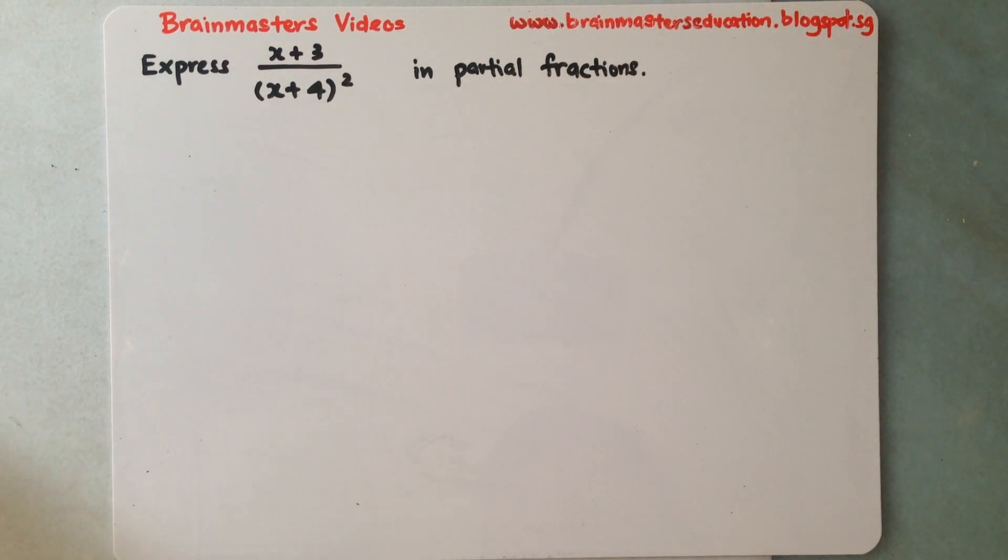Welcome back to Brainmaster's Videos. I'll be continuing on partial fraction type 2 questions. Previously I told you that type 2 has the power square outside the bracket for the denominator.